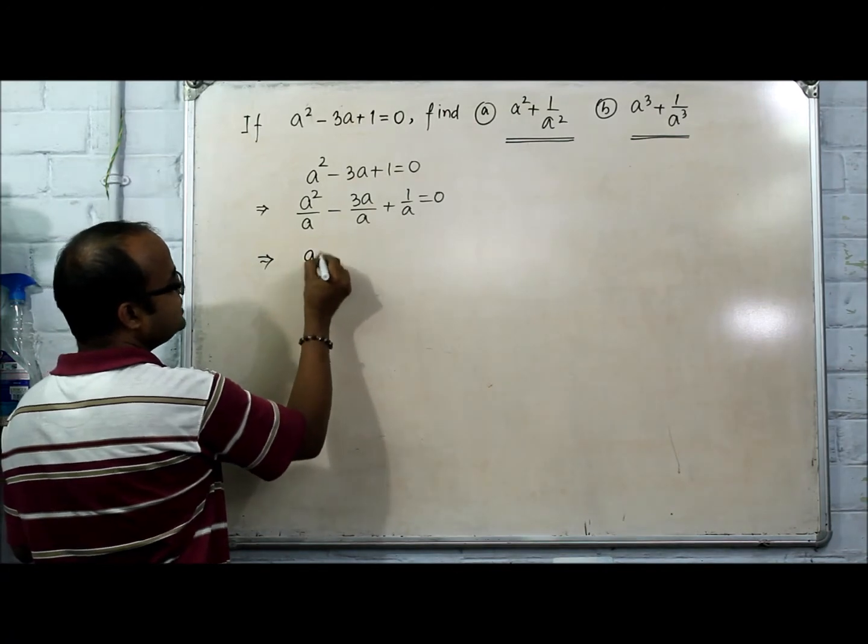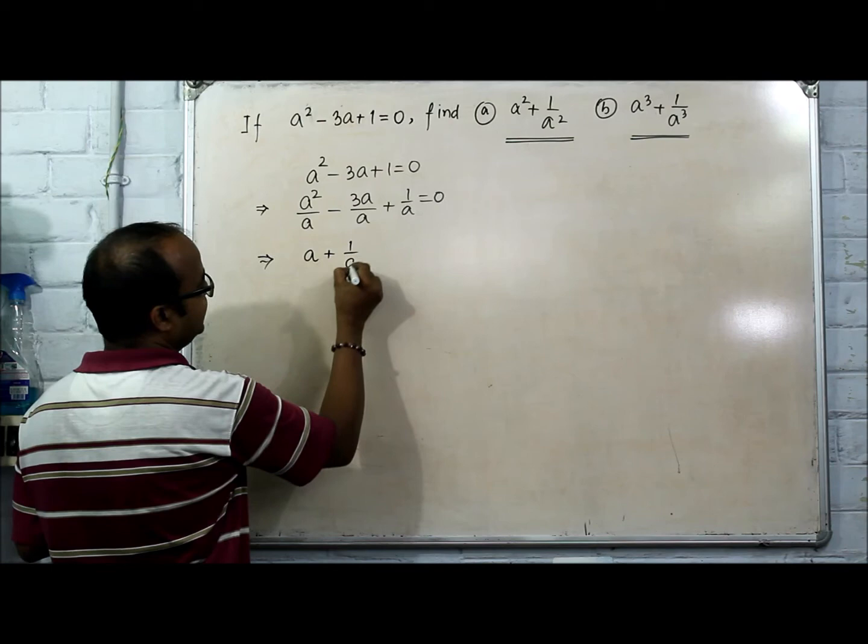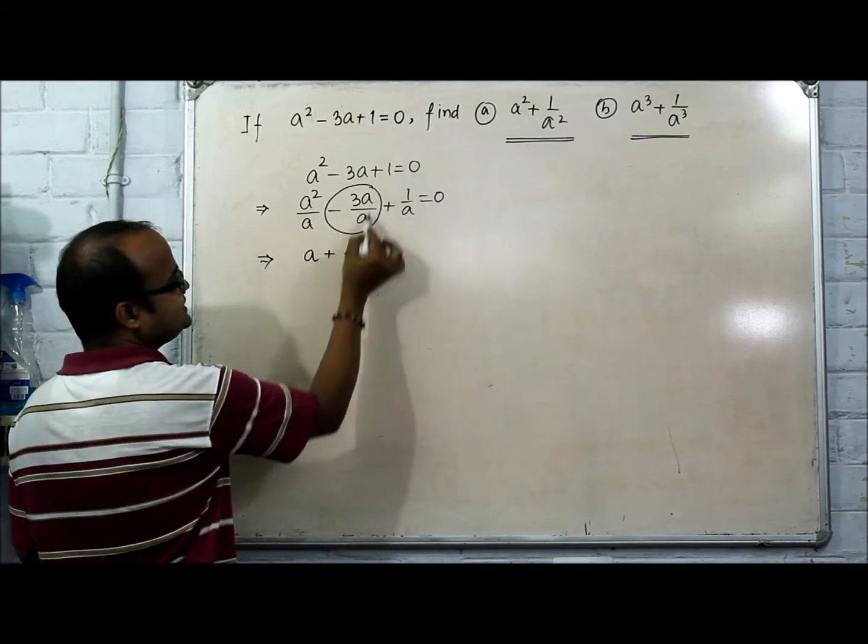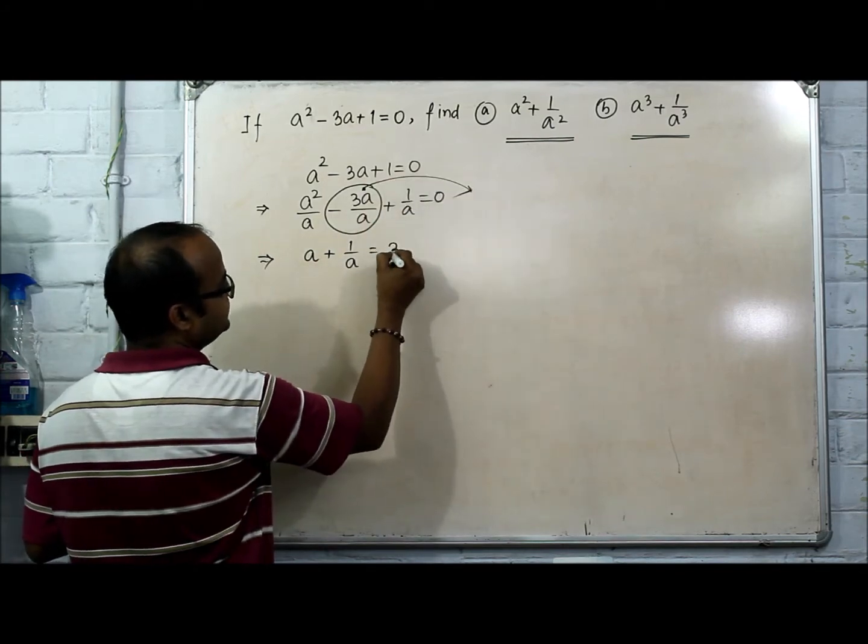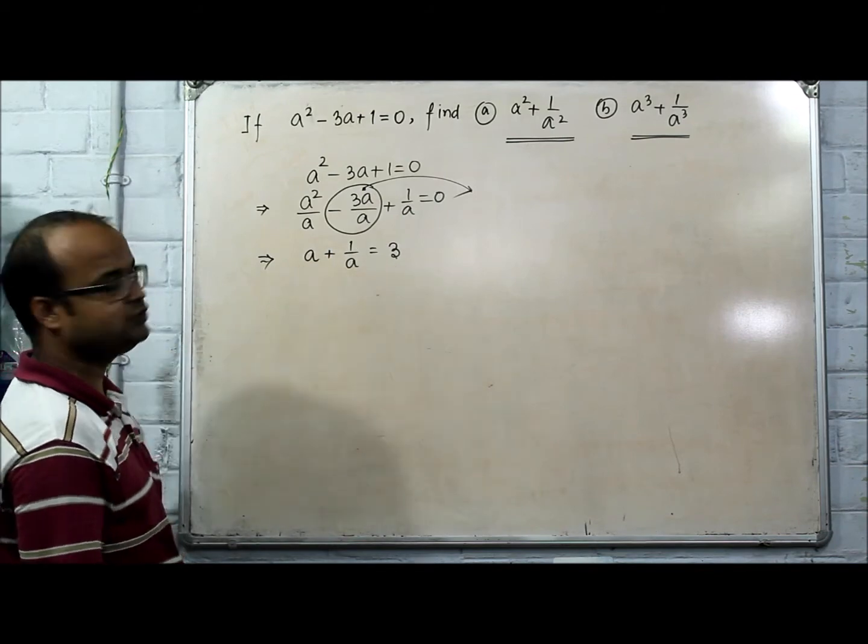a²/a means a plus 1/a. Now this is the term, you will get minus 3. Once you send it to the other side, you will get plus 3. So you will get the value of a + 1/a = 3.